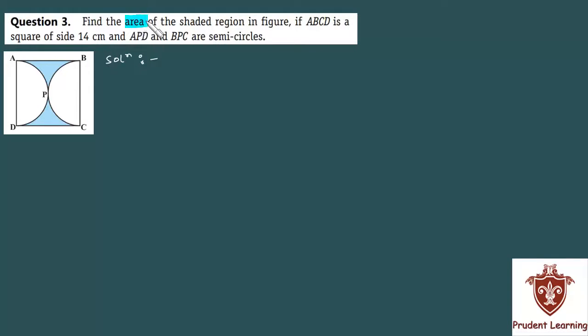Find the area of the shaded region in figure if ABCD is a square of side 14 cm and APD and BPC are semicircles.